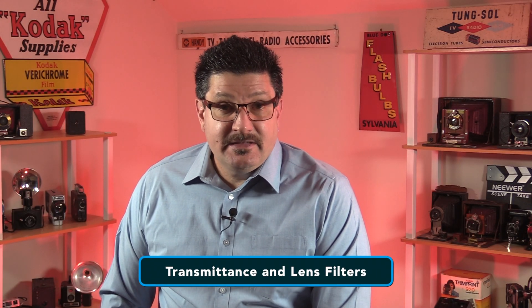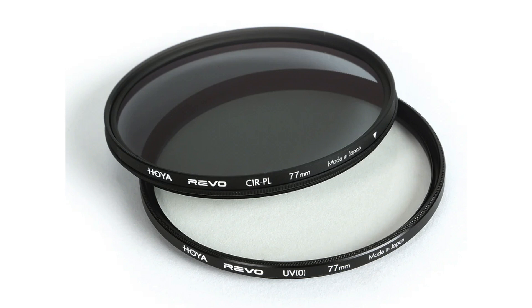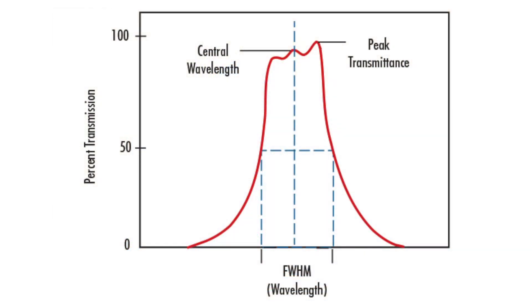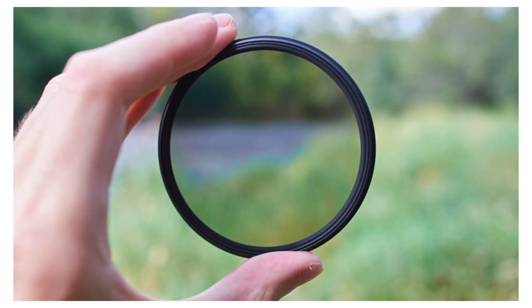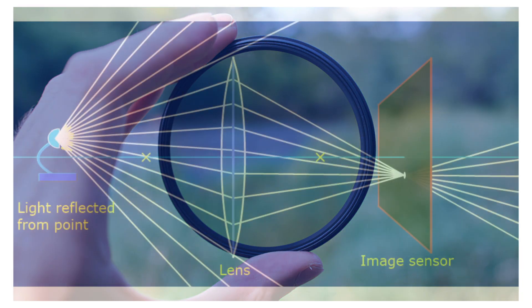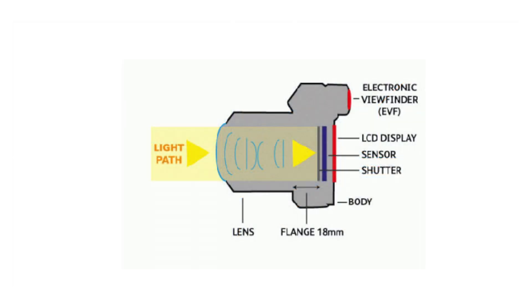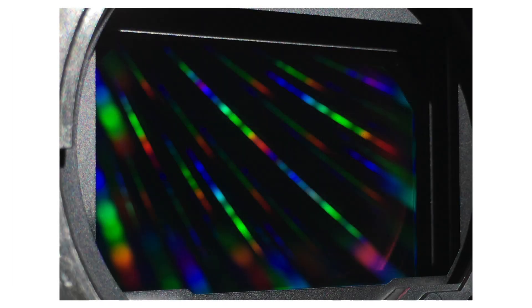Let's talk about transmittance and lens filters. Transmittance is also discussed in relation to filters that go on the lens. It is the amount of light allowed to pass through the filter and then through the lens, usually represented as a percentage. For example, a filter with a 50% transmittance rate will let 50% of the light through into the lens and ultimately to the camera sensor. That 50% light loss from the filter is in addition to the light loss caused by the elements within the lens itself.